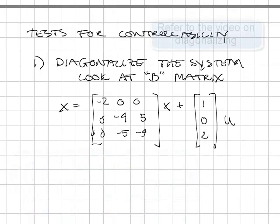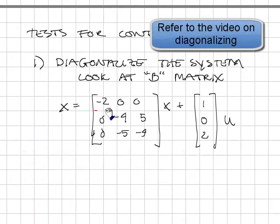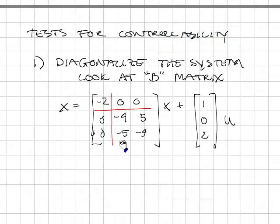Here is a system that's been block diagonalized. So it has eigenvalues at minus 2 and a complex eigenvalue at minus 4 plus or minus 5i. This system is controllable because u can affect the state corresponding to minus 2 eigenvalue, and you can affect this block. Even though there's a 0 right here, this 2 affects this bottom state, and it's coupled to the state above it.